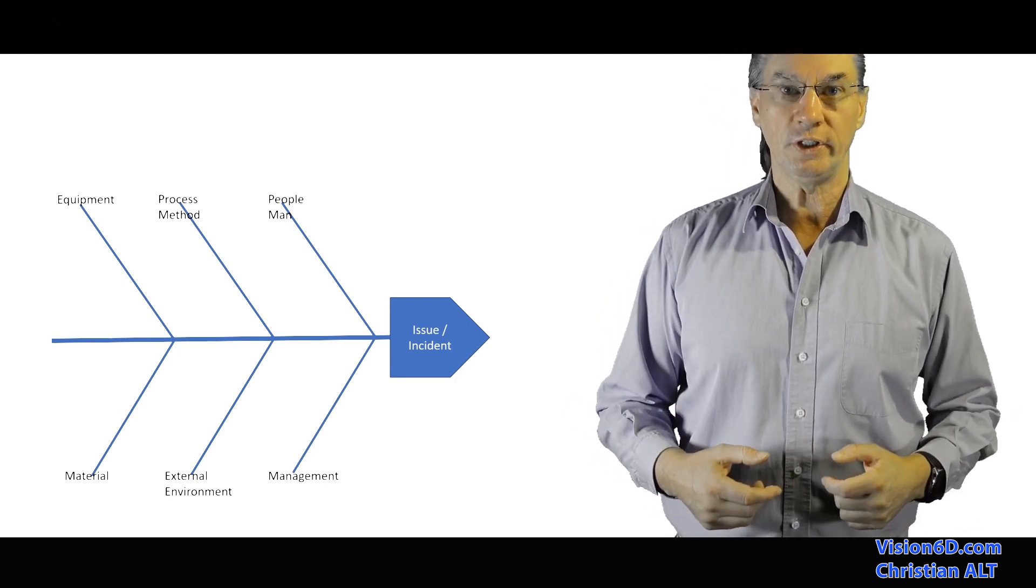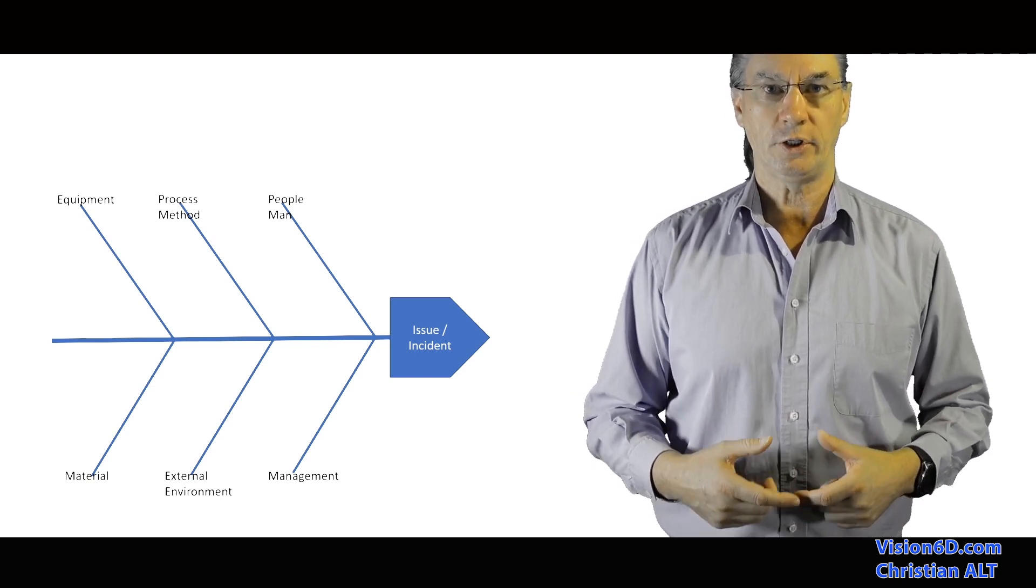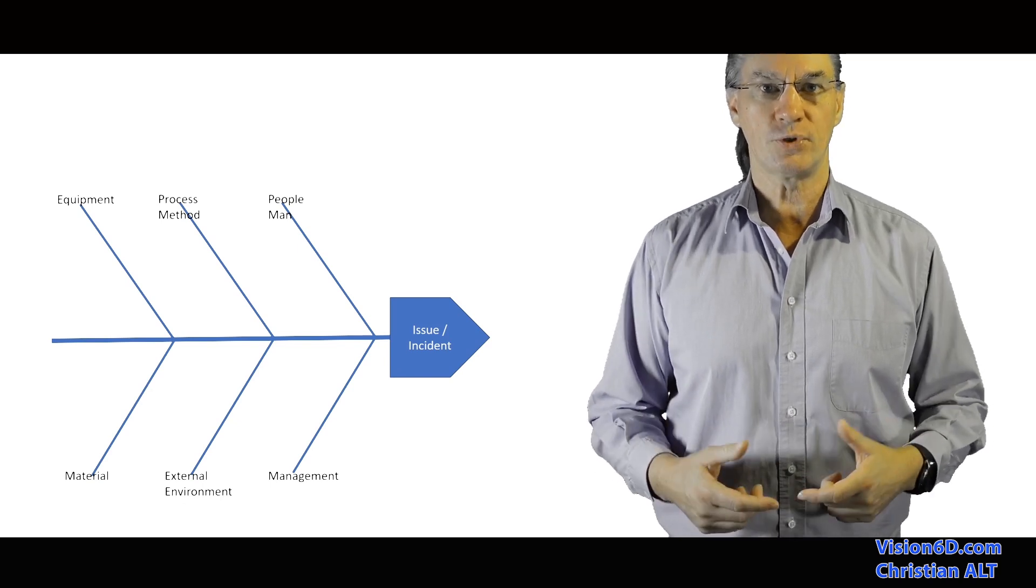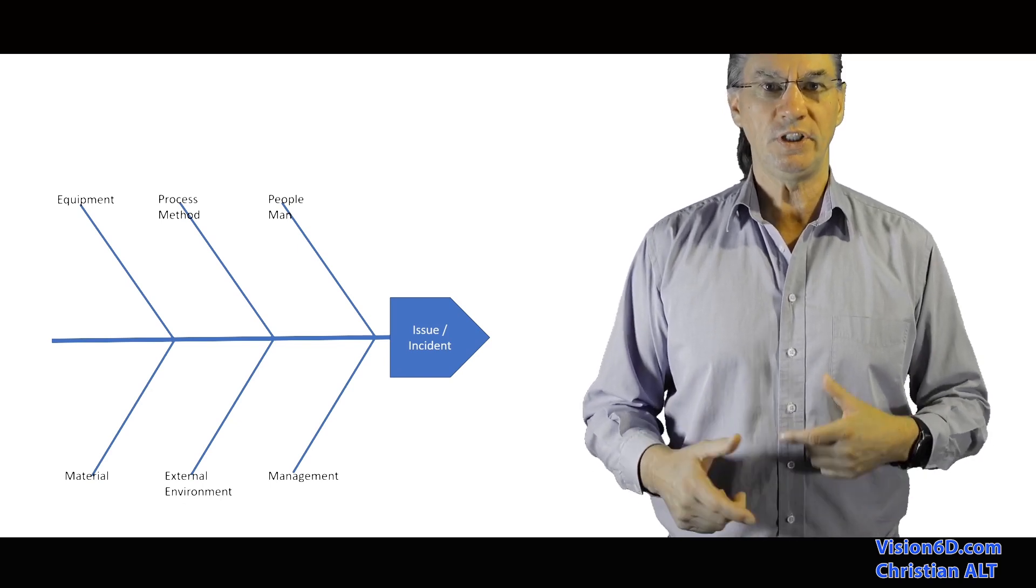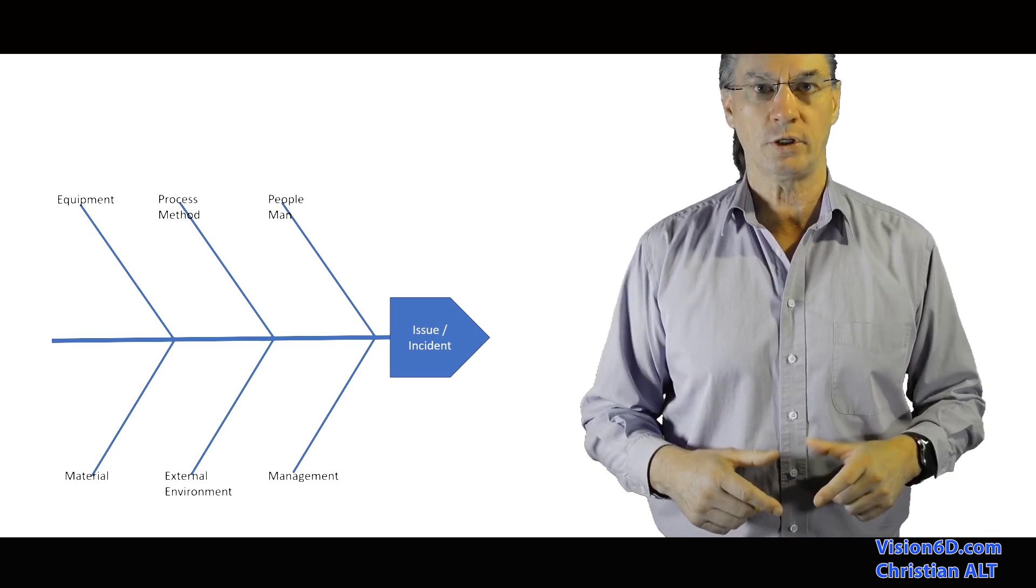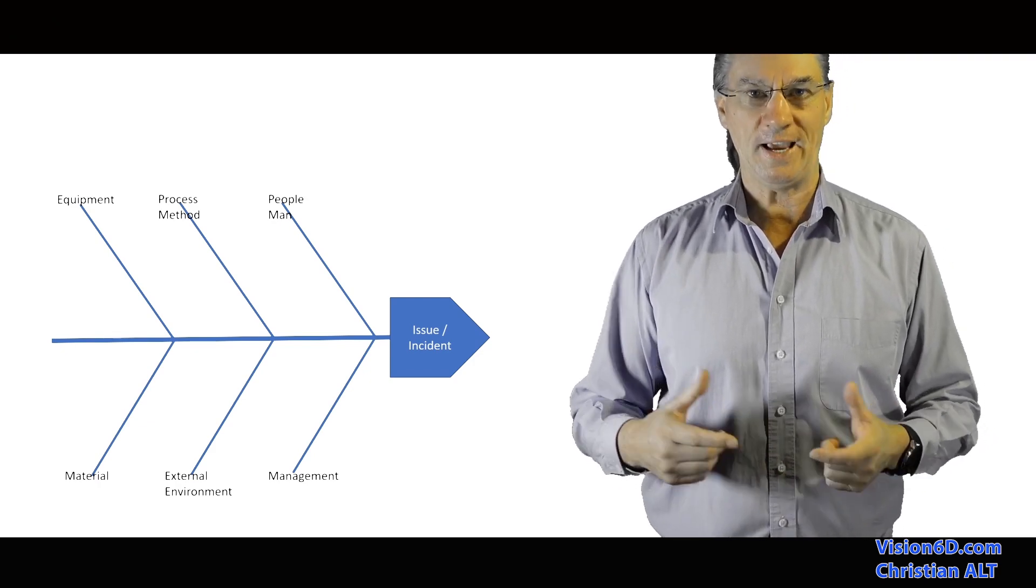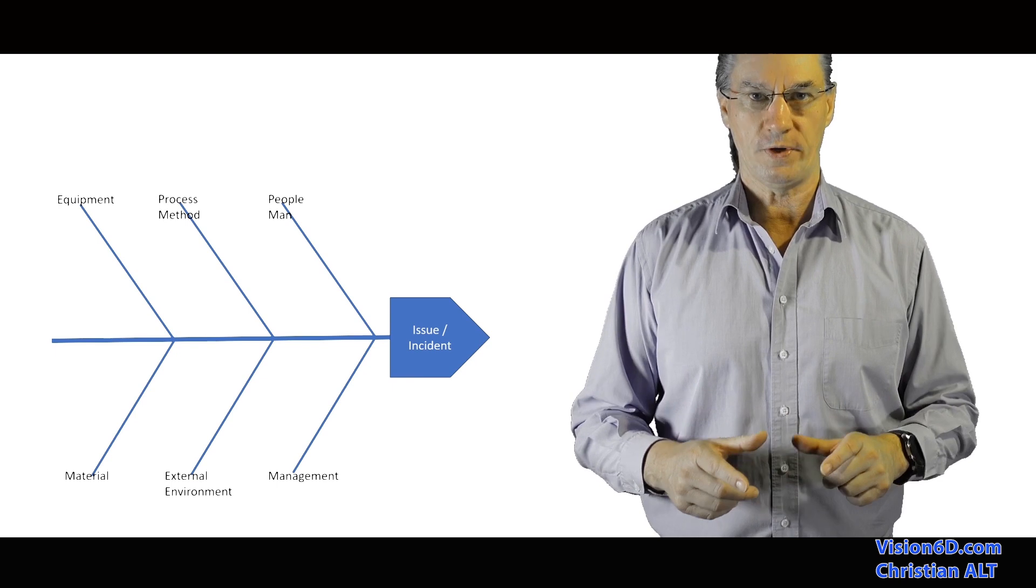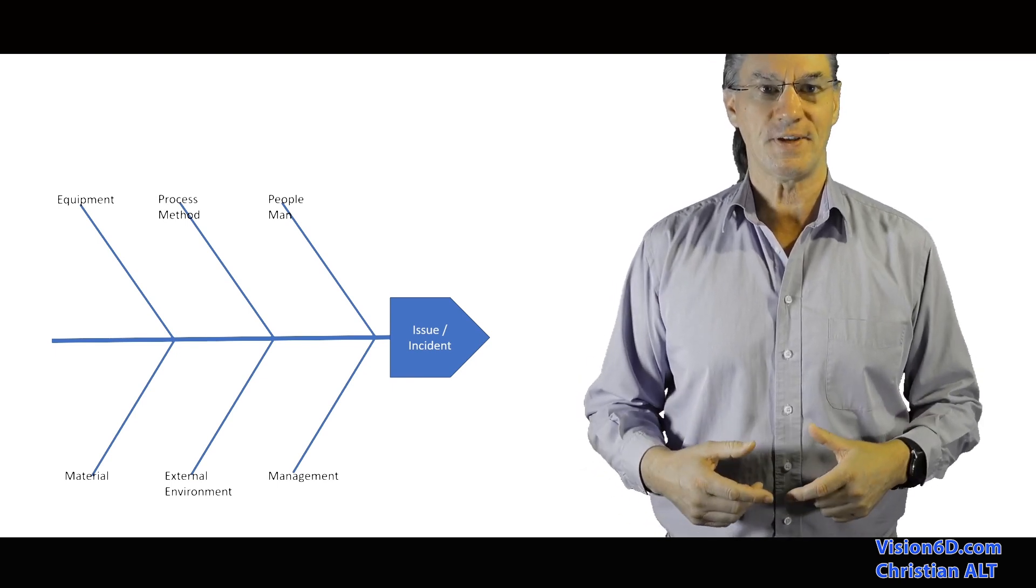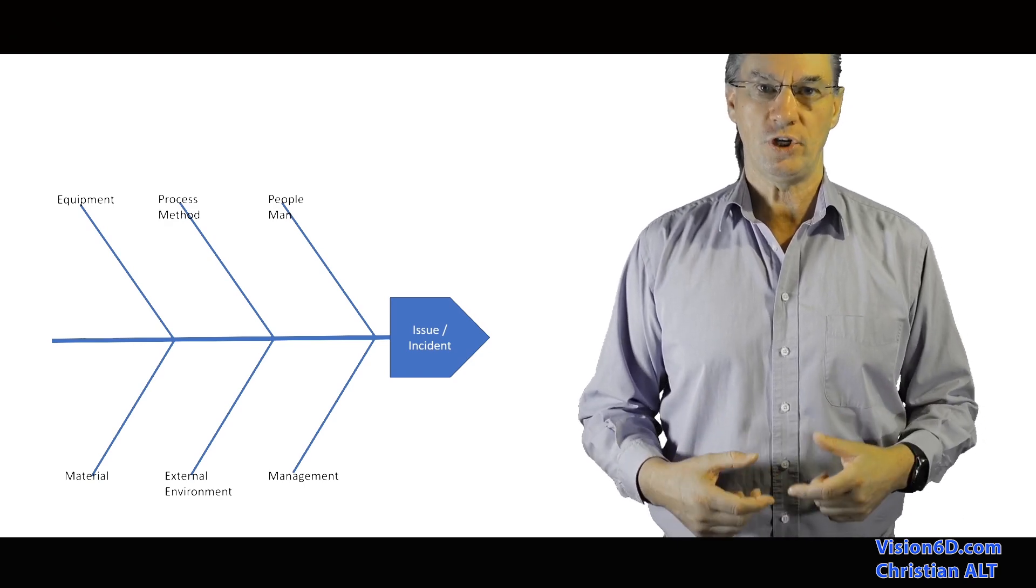Then the material, in our case, it was the emails themselves. Emails were composed of multimedia. We were sending videos to our customers. So did it have something to do with the volume of those emails or how they were constituted? Then we also thought of the external environment. What was the surrounding of our systems? Was there something wrong? And we added a category, which is management.